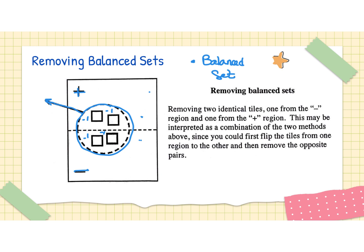Why can we do this? If I took these two and, using green to indicate flip, brought them up and redrew them as positive unit tiles, I would end up having a zero pair that I could remove, because the negative and the positive add together. So the idea of the balanced set saves you two additional steps — obviously this is the way that you want to do something like that.